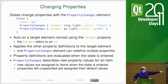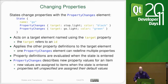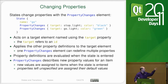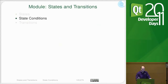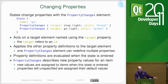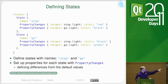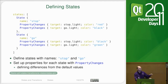The property change object takes in a target and then a list of properties to change. For any given target, you can change multiple properties — x, y, color, height, anchors, and so on. However, for each target you need a separate property changes object. When you switch states, if a property was set in the stop state but not in the go state, it reverts to how it was initially set in QML — it goes back to the initial state and doesn't stay.